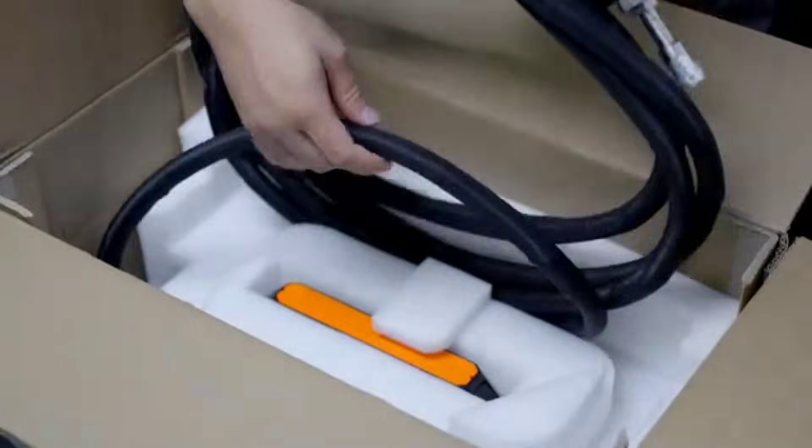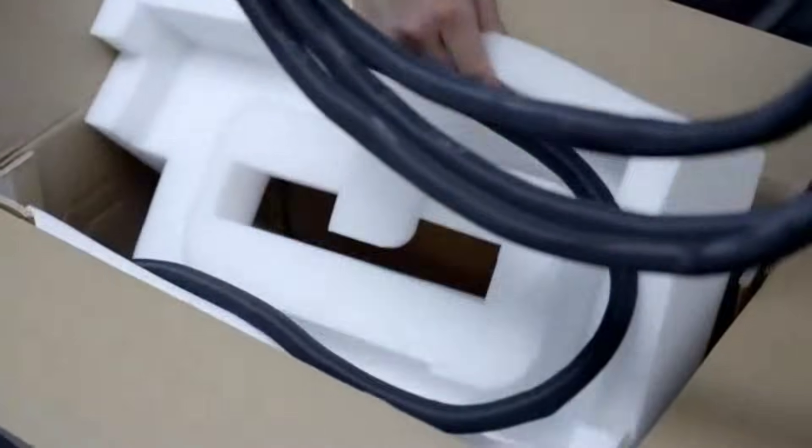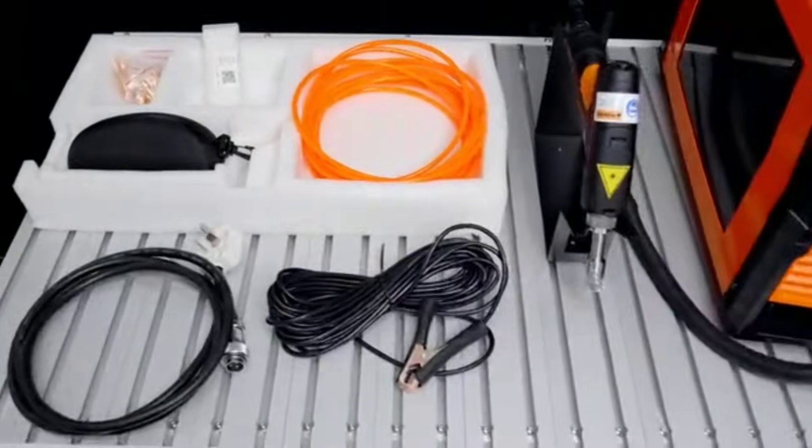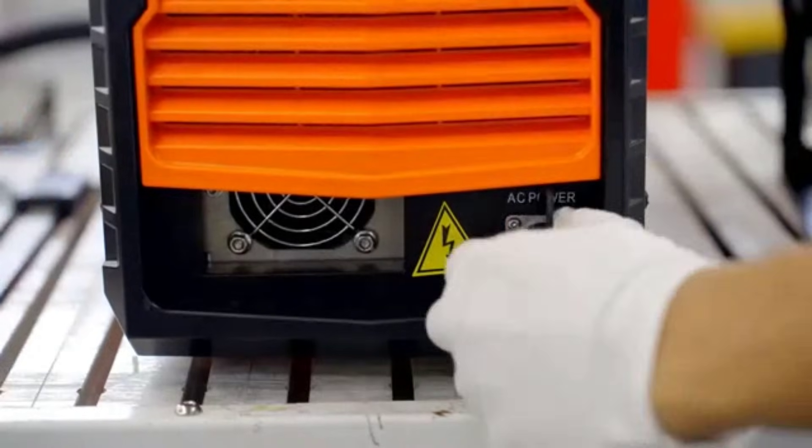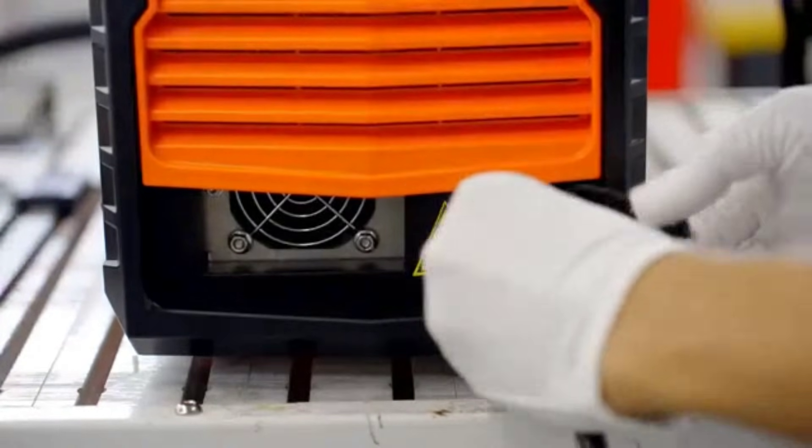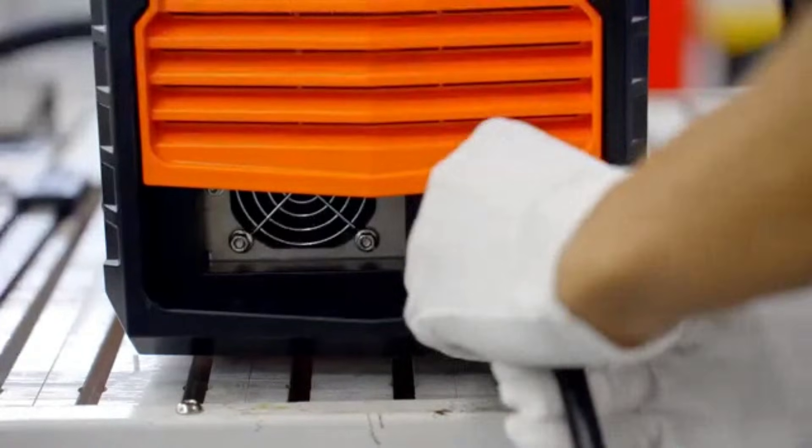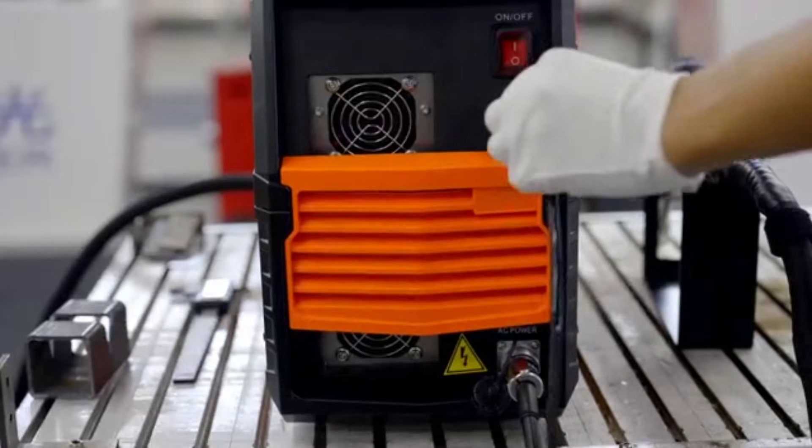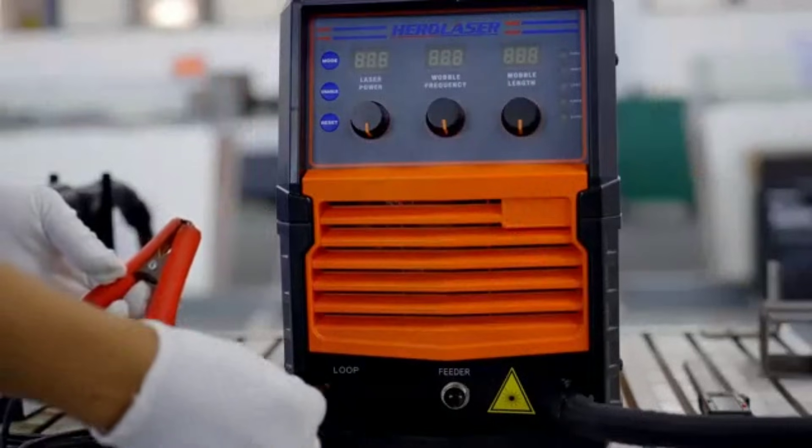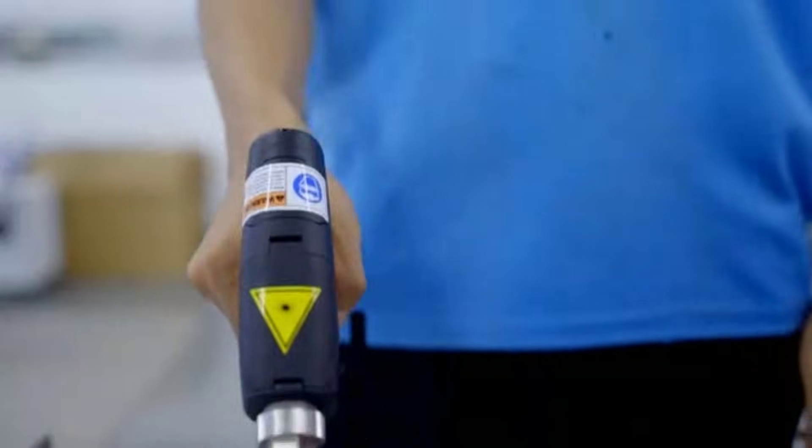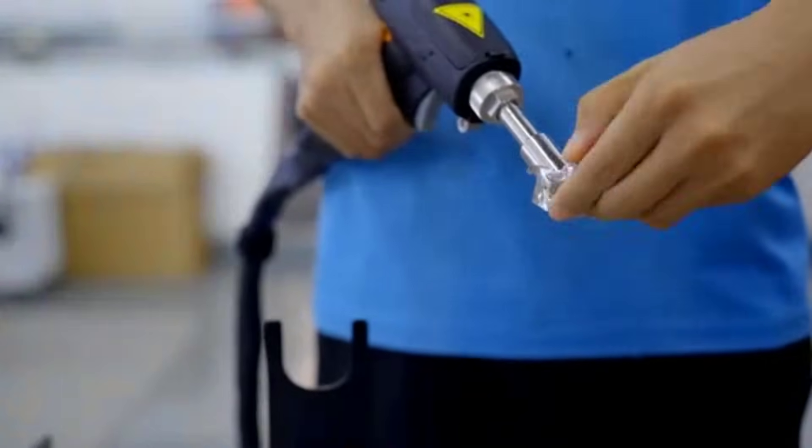Despite its lower power output compared to industrial-grade models, the 700W laser still performs remarkably well on metals such as stainless steel, aluminum, and copper. The air-cooled design eliminates the need for bulky water chillers, simplifying setup and maintenance. It's an excellent choice for light fabrication, jewelry repair, or tech-related applications where precision is more important than brute force.